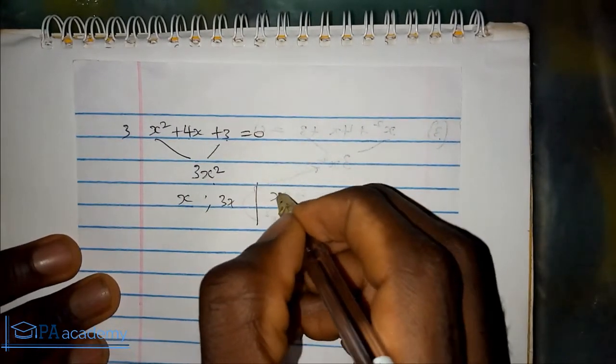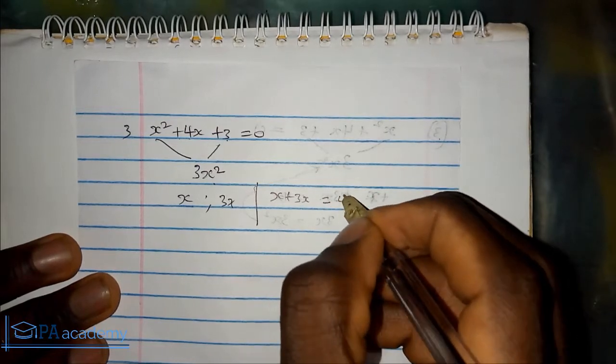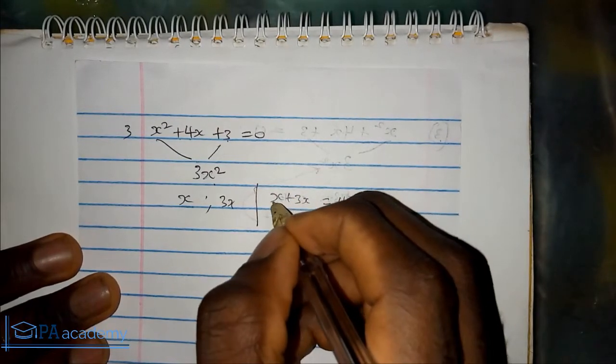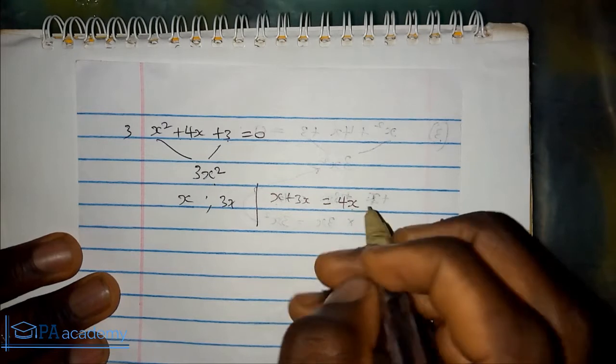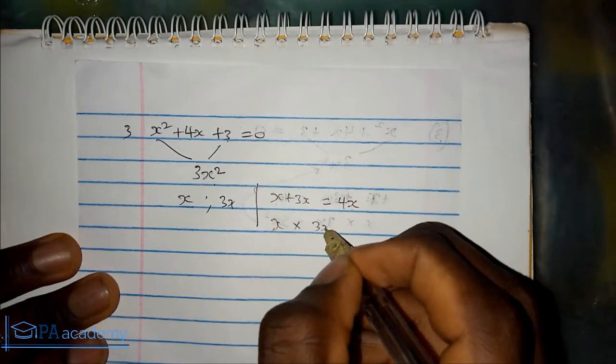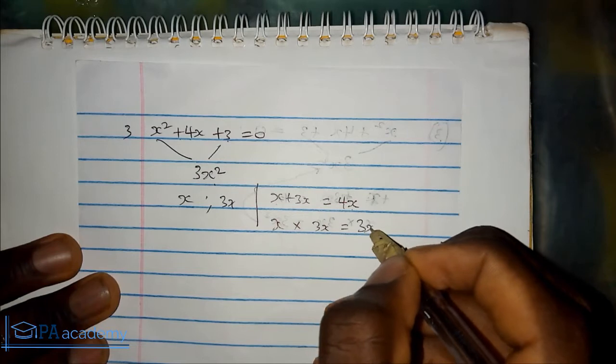When we multiply x plus 3x, it gives us 4x. I mean, when we add it rather, x plus 3x gives us 4x. If you multiply x times 3x, it gives us 3x squared.